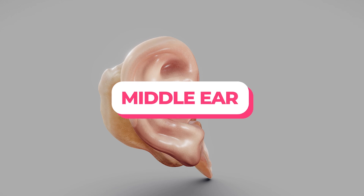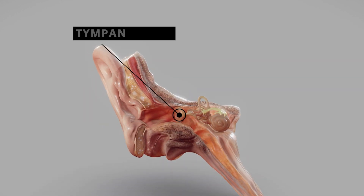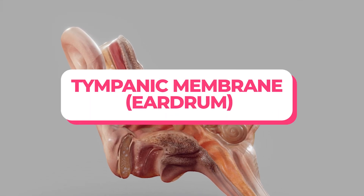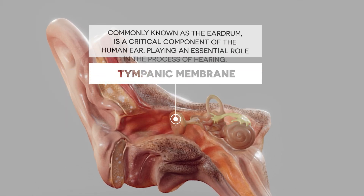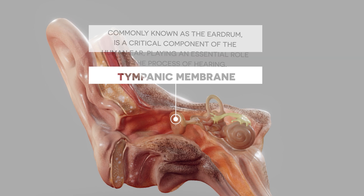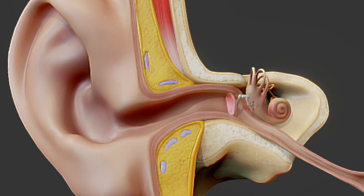The middle ear has two major components: the tympanic membrane and the ossicles. The tympanic membrane, commonly known as the eardrum, is a critical component of the human ear playing an essential role in the process of hearing.